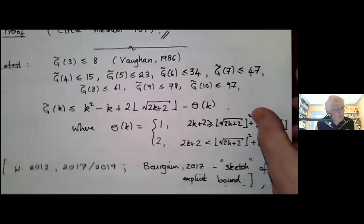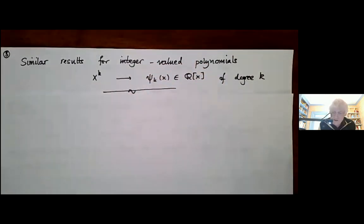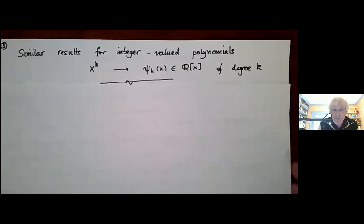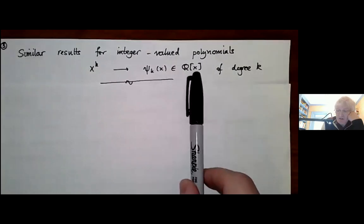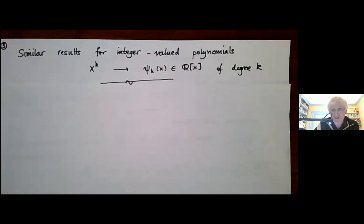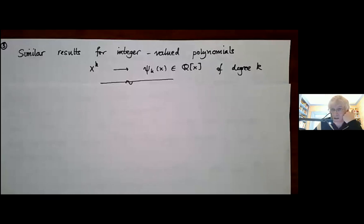What I want to say by way of introducing the topic of this talk is that you can obtain similar results to the ones I've mentioned for integer-valued polynomials. So if I replace x^k by a polynomial of degree k with rational coefficients that takes integer values, all of the results have analogues with the same number of variables and you get an asymptotic formula. The asymptotic formula and local solubility conditions change a little, but that's all a very well understood topic, going back to work of Necaev and others in the early 1950s.